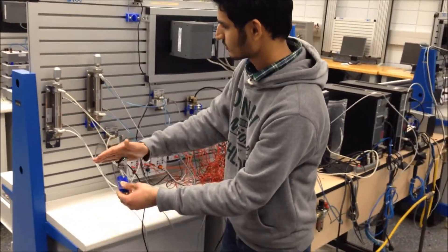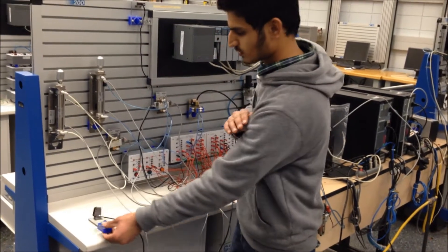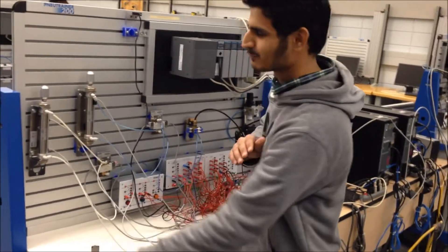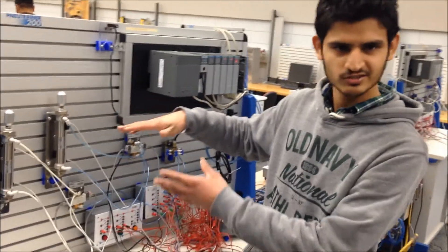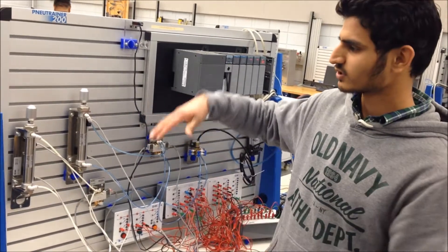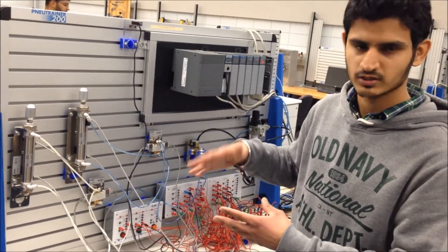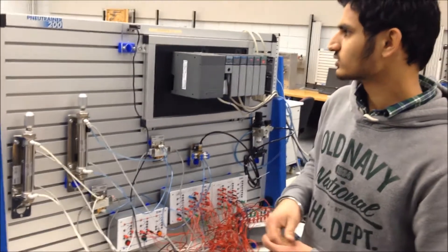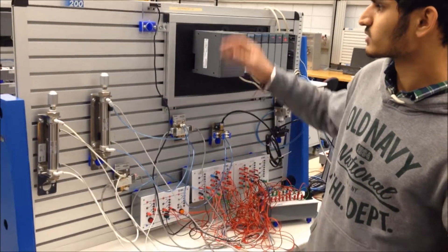I am going to move my hand here. You may notice the process is very fast. As I explained earlier, cylinder A extends, cylinder B extends, then B retracts and then A retracts. Now in the second condition, I am going to place my hand over photosensor B.